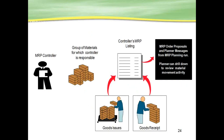This screen shows how MRP results are listed. The MRP controller is typically mapped to one person or a group responsible for controlling a set of materials. The MRP list is the proposal output of an MRP planning run — the planner can monitor different material movement activities from this list, whether it is goods issue or goods receipt.